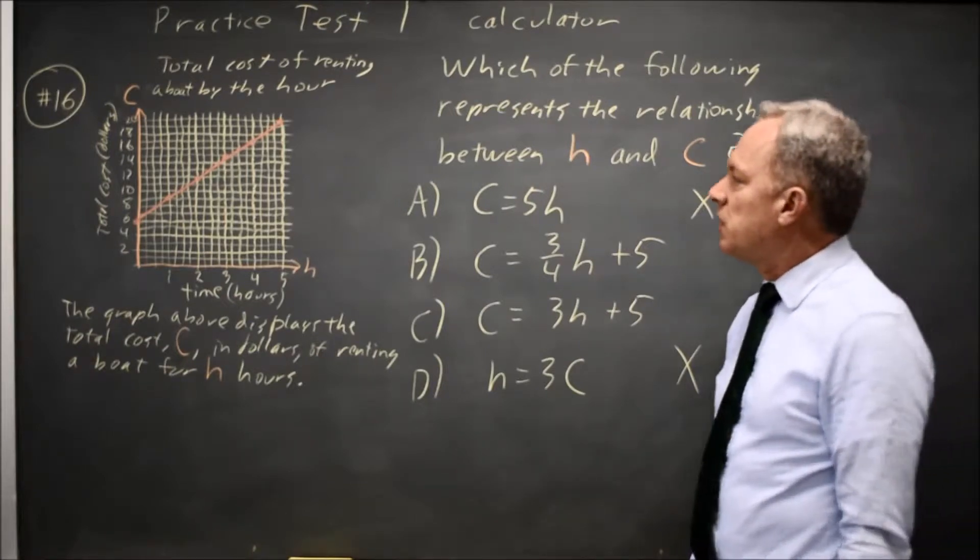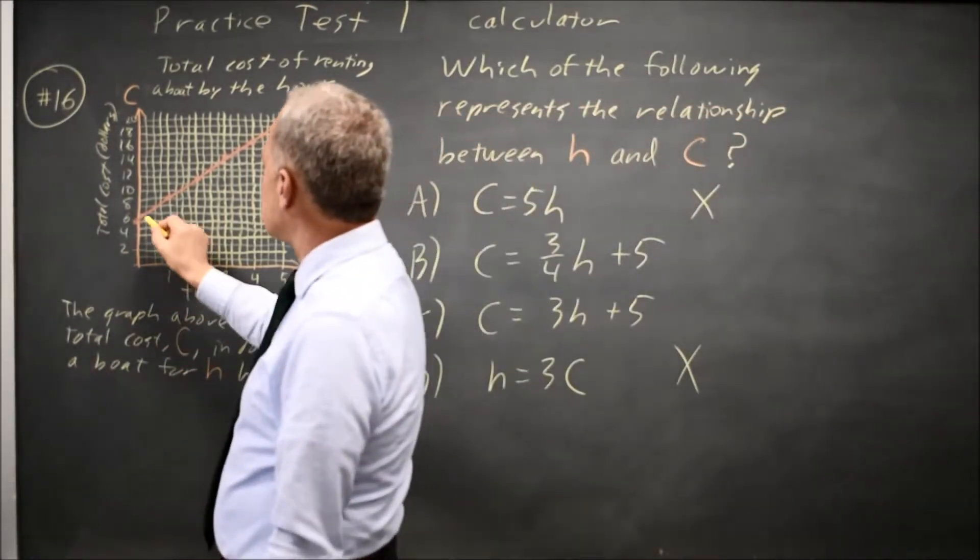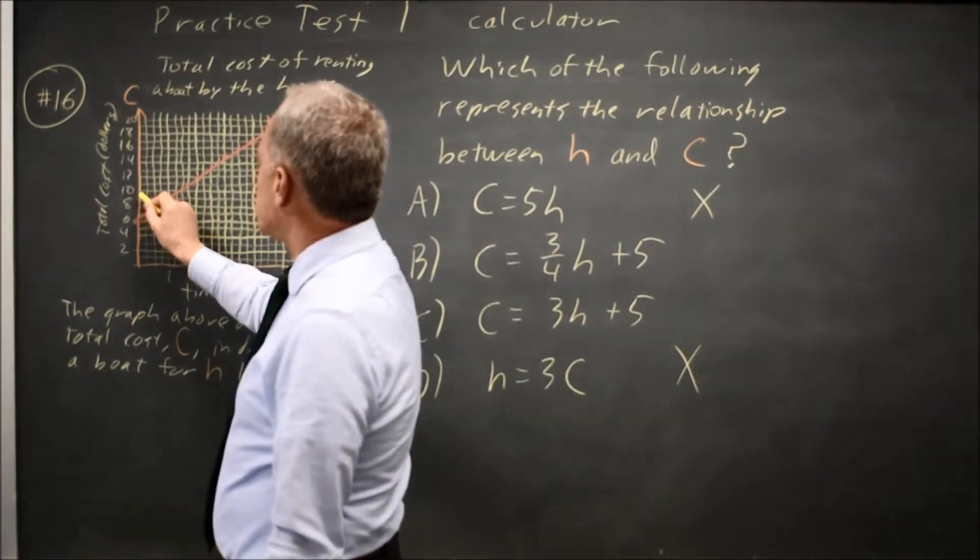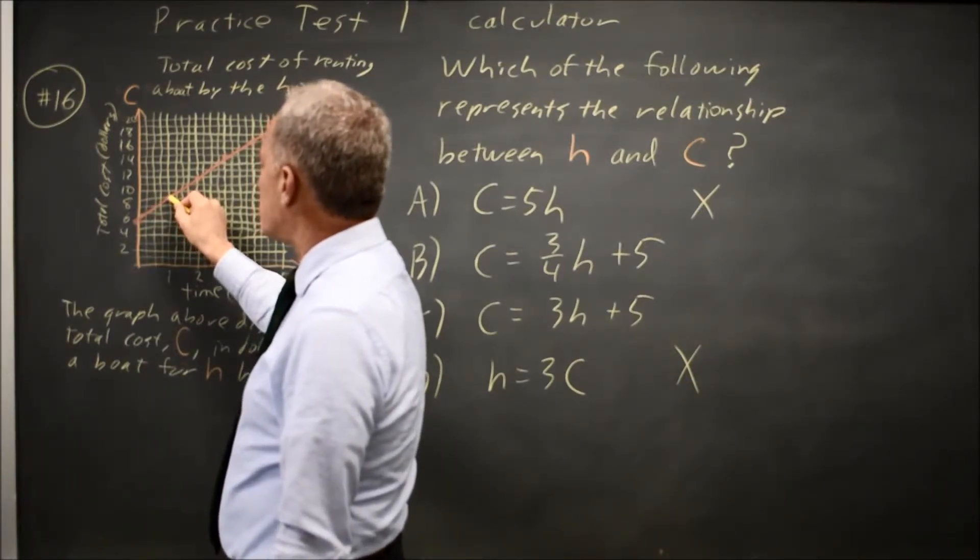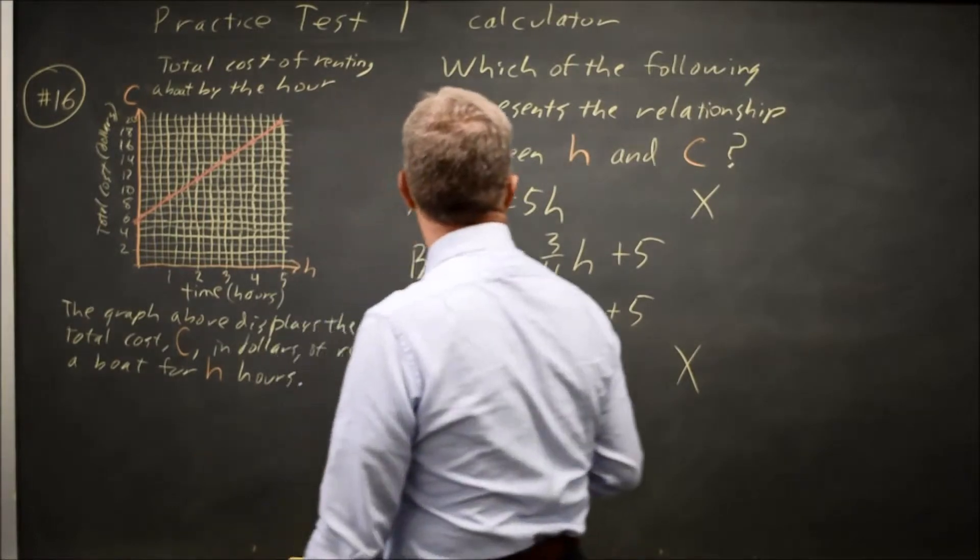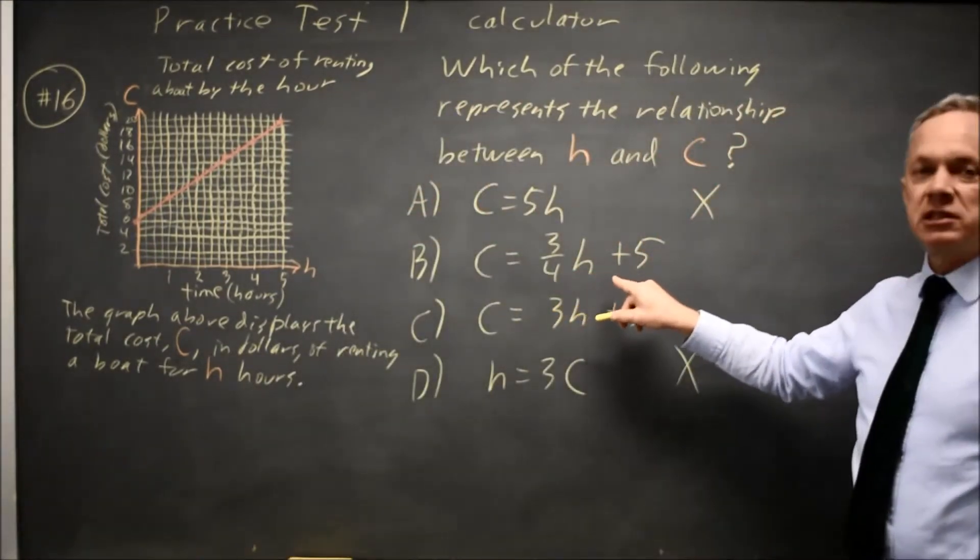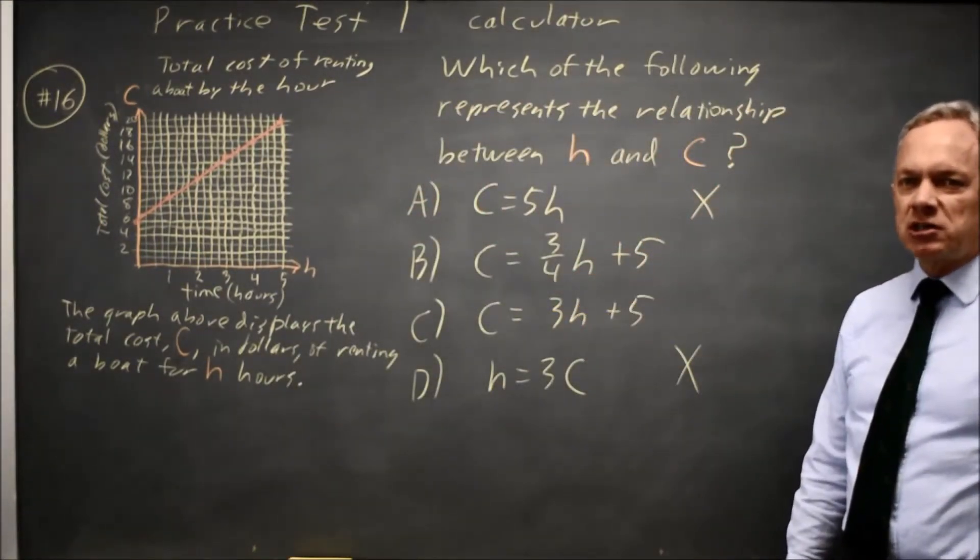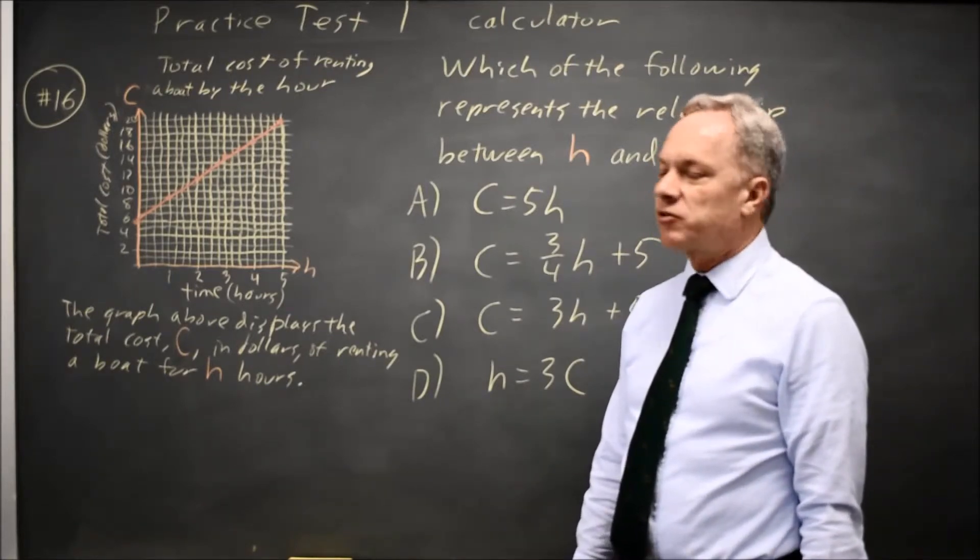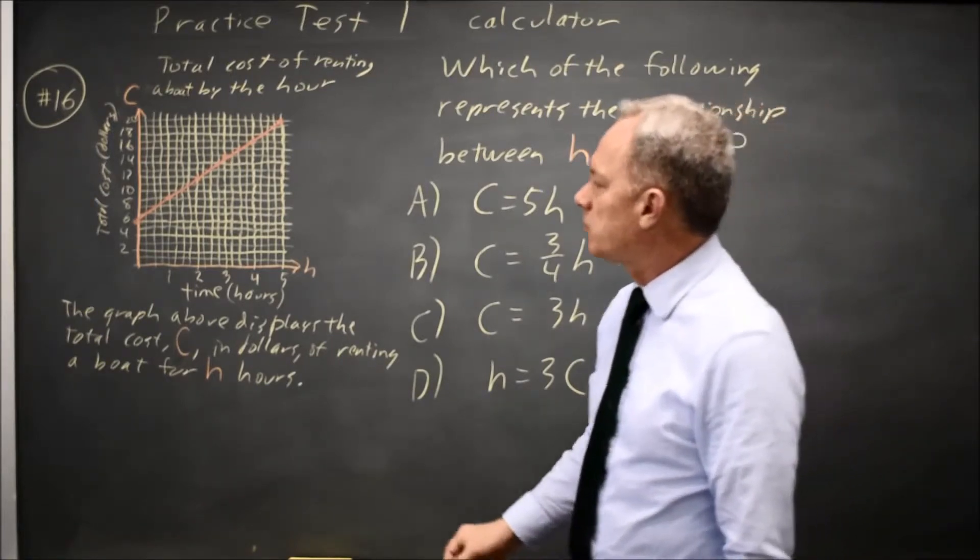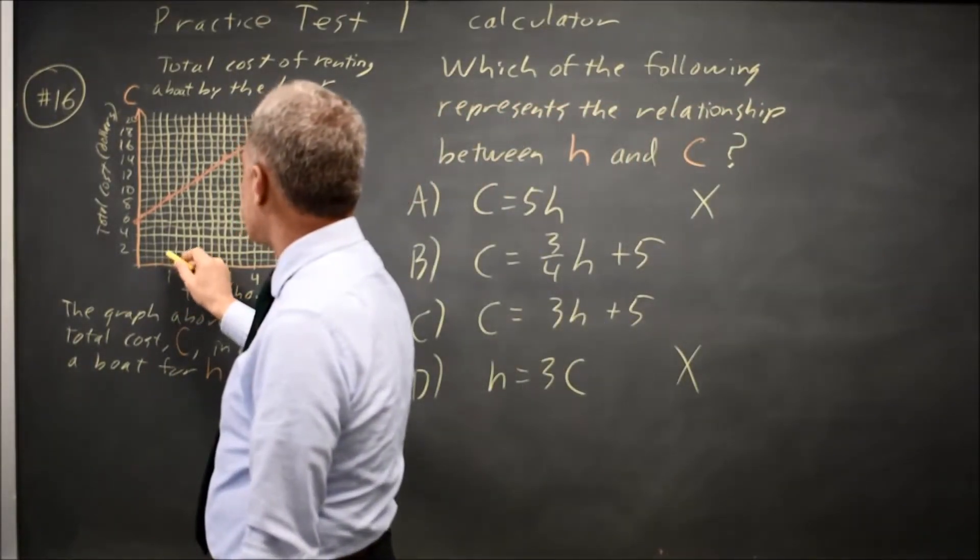The question is, what is the slope? And it's tempting to count squares. I go up three squares and write four squares, so the slope, change in Y over change in X, looks like 3 over 4. And many people will choose C. But keep in mind that College Board often labels the graphs with different scales on vertical and horizontal. And in fact, in this case, they have done that.